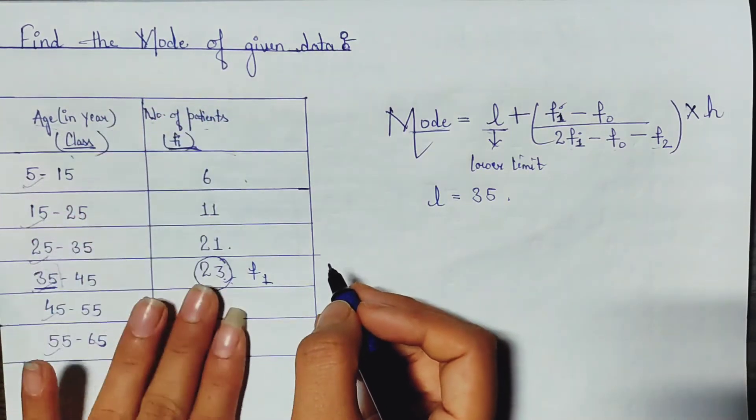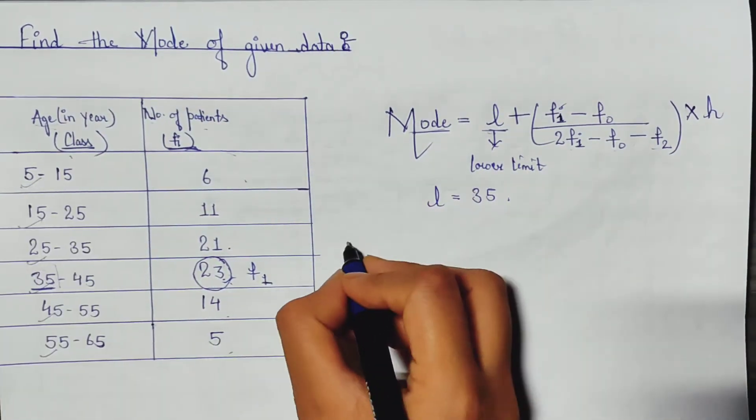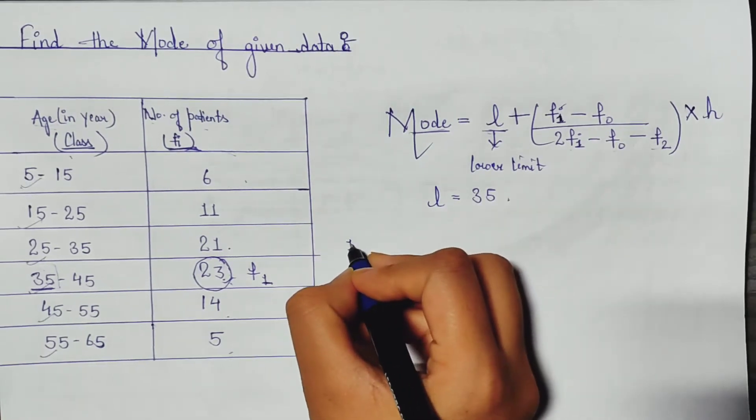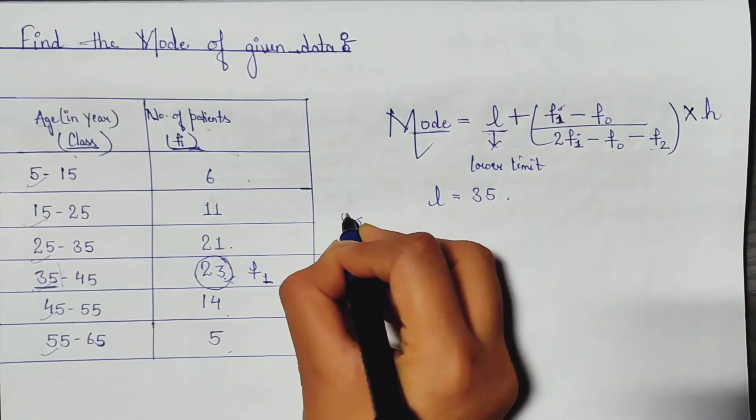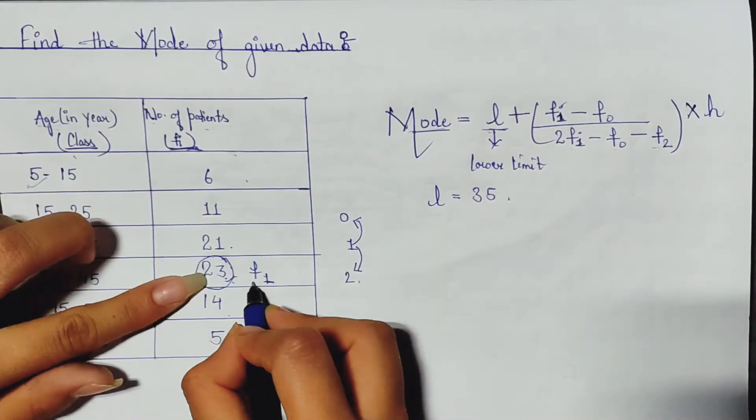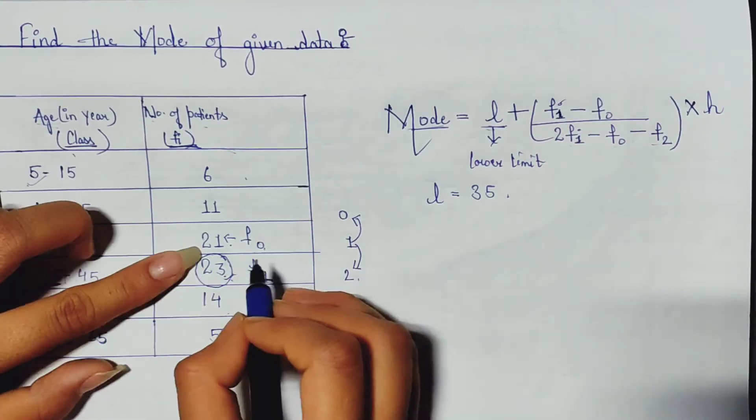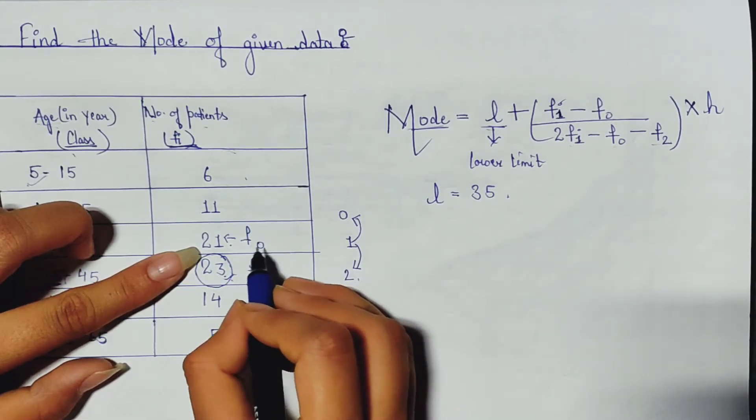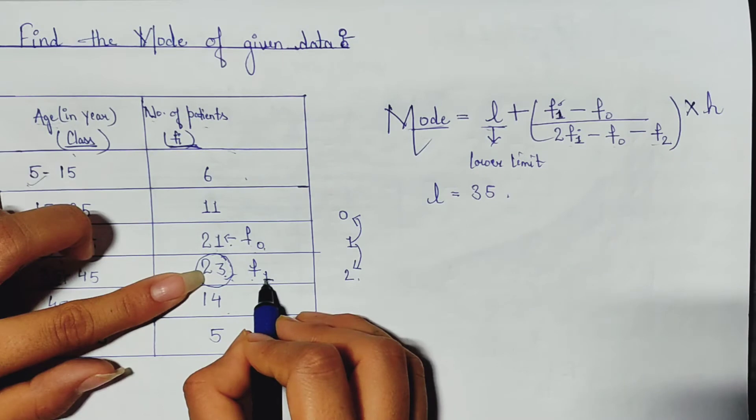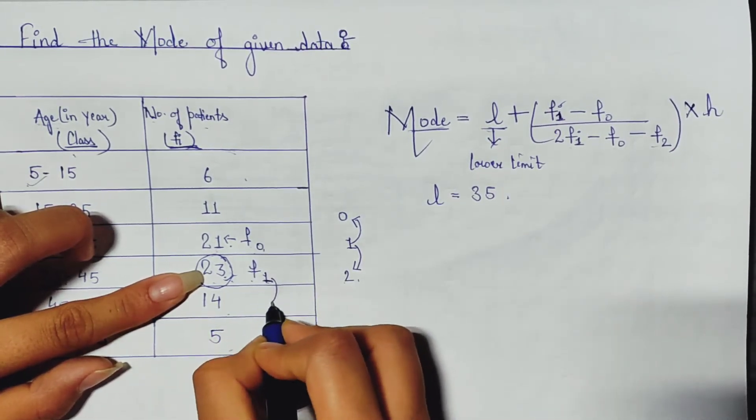In any question, the highest value we consider it as f1. And we all know the counting: before 1 here is 0, and after 1 here is 2. So if it is f1, then just above it is f0. So value of f0 is 21, value of f1 is 23, and after 1 we are getting 2, so here f2. Value of f2 is 14.